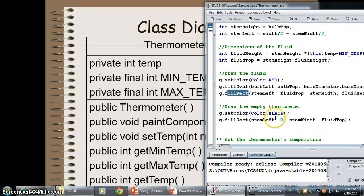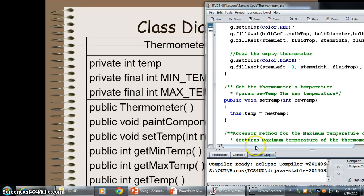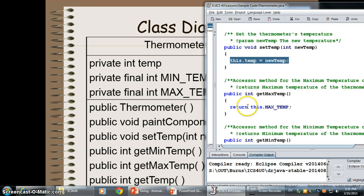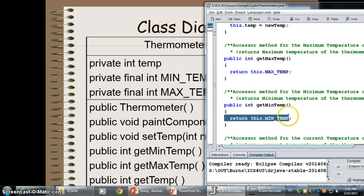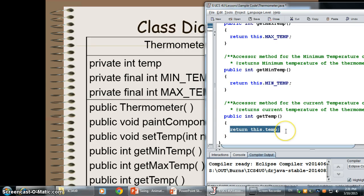So, that will look like this. SetTemp is very simple. I just set the temp value. Same thing with the accessor methods. I'm just going to return the values in each of those instance variables.